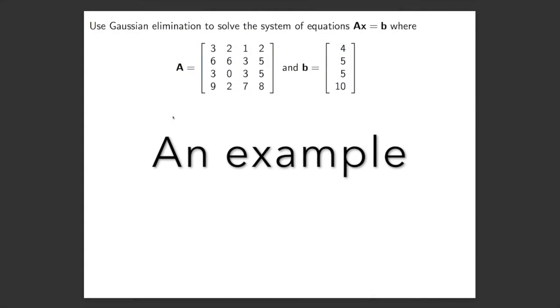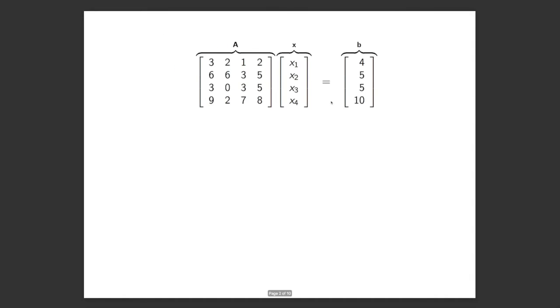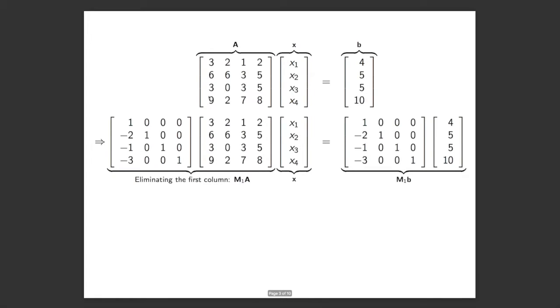Let's look at an example of Gaussian elimination to solve a system of equations. Here we're given A, this 4 by 4 matrix here, and B. So we have AX equals B, and the aim of Gaussian elimination, remember, is to start with the leading non-zero term and clear out everything below it. So we want to get in this column, we want to get a 3 with a bunch of zero terms below it.